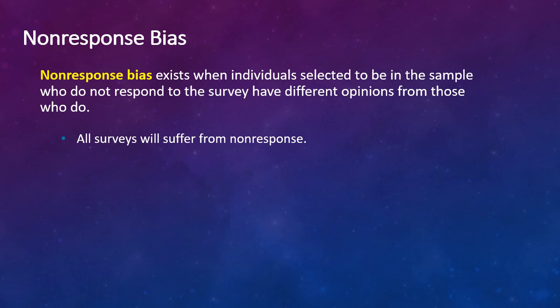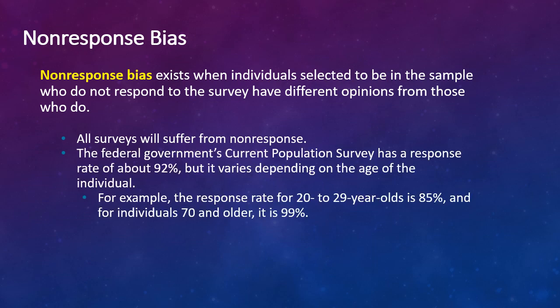All surveys suffer from non-response. There's not a 100% survey rate typically. The federal government's current population survey has a response rate of about 92%, but it varies depending upon the age of the individual. For example, the response rate for 20 to 29 year olds is 85%, versus individuals 70 and older, it's 99%.